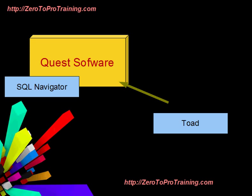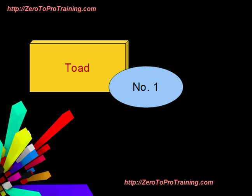Quest software already owned a competitive product called SQL Navigator. Toad still remains the most successful database development and administration tool for Oracle database professionals, even in the presence of tough competition from Oracle's own software offerings and from other vendors.